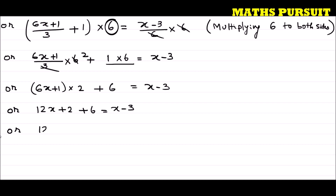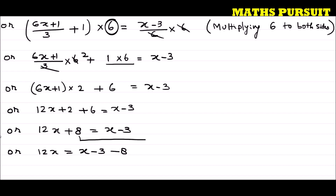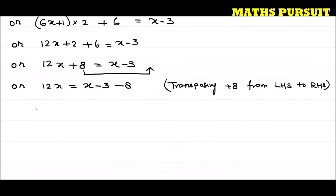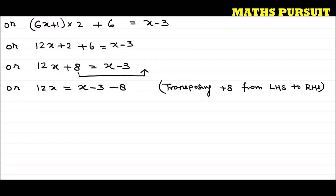So I can write 12x = x − 3 − 8. Here I am transposing plus 8 from the left hand side to the right hand side. What I did is I just moved this plus 8, so we get 12x = x − 11.